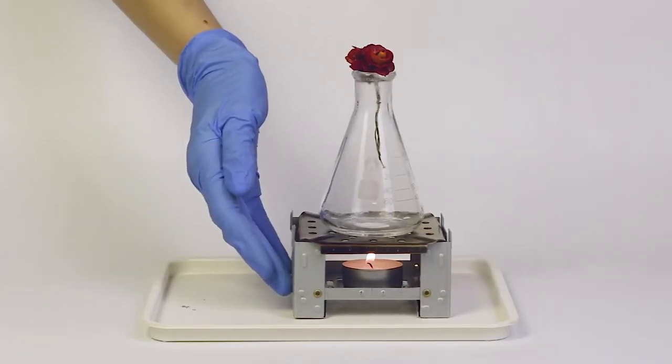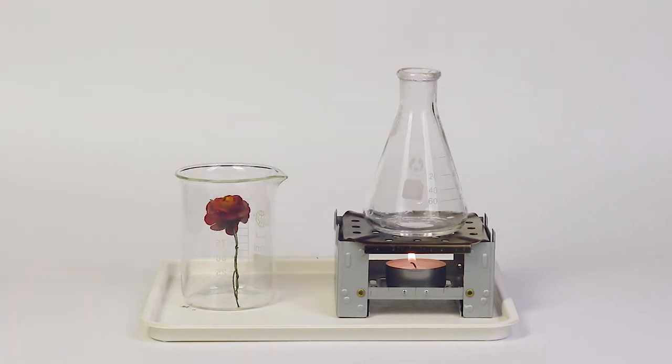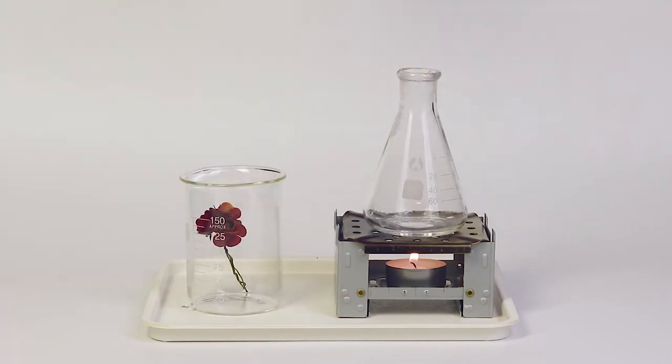Take the flowers from the flask and put them in the beaker. In order to stop the production of the gas, pour excess water into the reaction mixture.